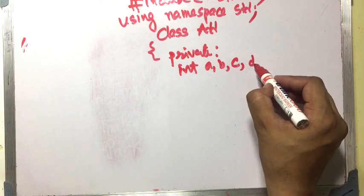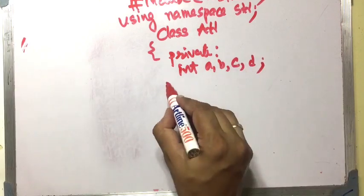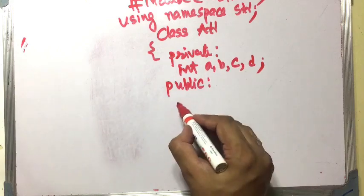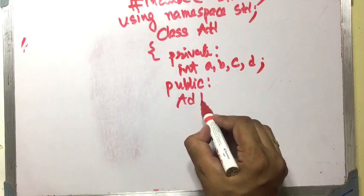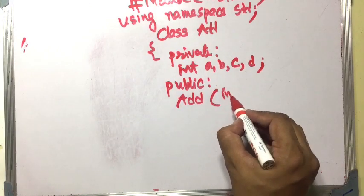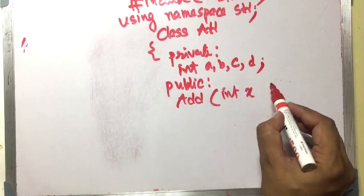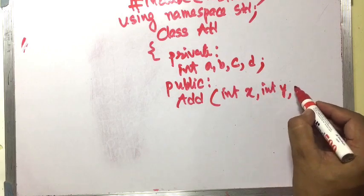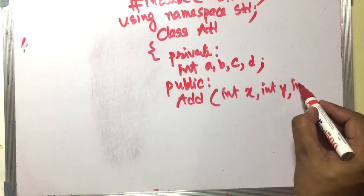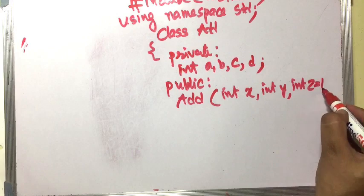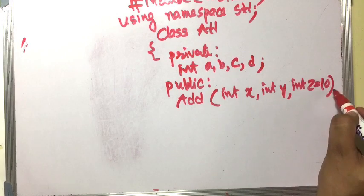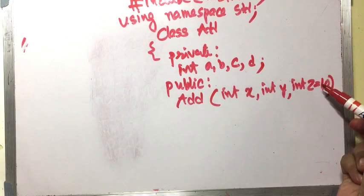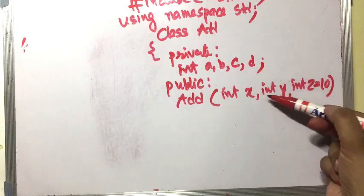This program will add three numbers and the result is stored in d. The public member consists of a constructor: add(int x, int y = 10, int z = 20). That assignment is the default argument constructor.